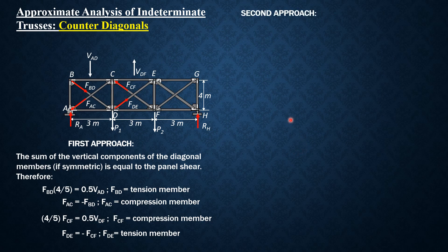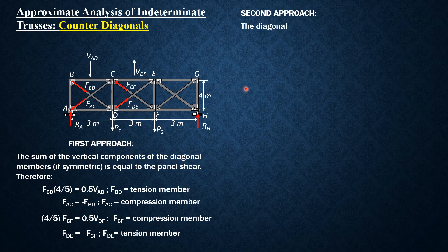For the second approach, when it is stated in the problem that the diagonal members are slender and cannot resist compression — such as when diagonal members are made of ropes or cables — it is understood they cannot resist compression. When a very slender member is subjected to compression, it undergoes buckling, so its compressive resistance is effectively zero.